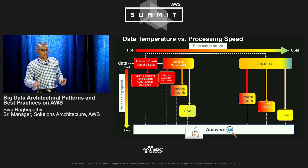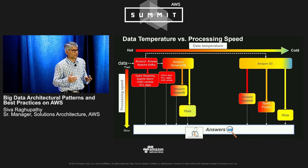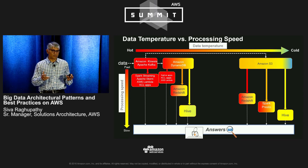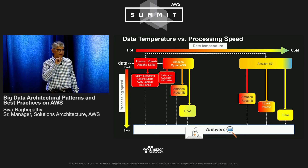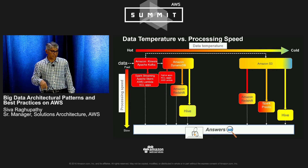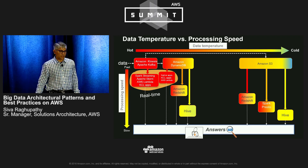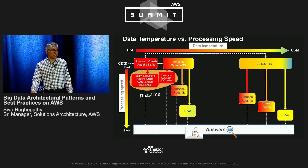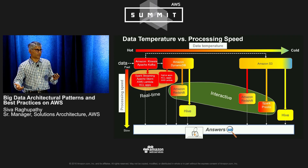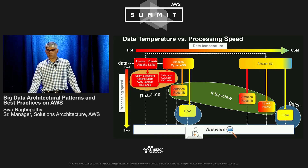This slide maps data temperature to the processing pipeline. Hot data goes into Kinesis or Kafka. DynamoDB can be used for both hot and warm data, and S3 is typically used for warm and cold data. If you put data in Kinesis, you can run Spark Streaming, Storm, AWS Lambda, or KCL to process it. The length of the arrow from those boxes indicates processing speed — shorter means faster, longer means slower, like Hive on the right side. For real-time analytics, put data in a hot store and process using fast processing technology. For interactive analytics, use a hot or warm store with moderately fast processing. For batch, your processing mechanism can be slower.